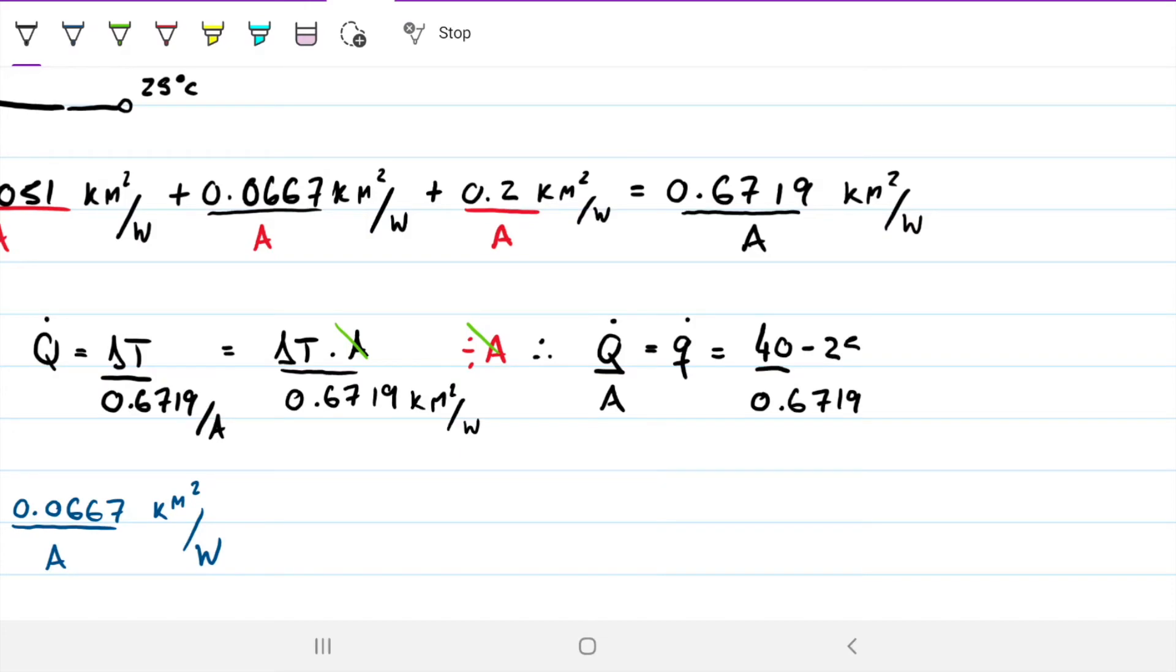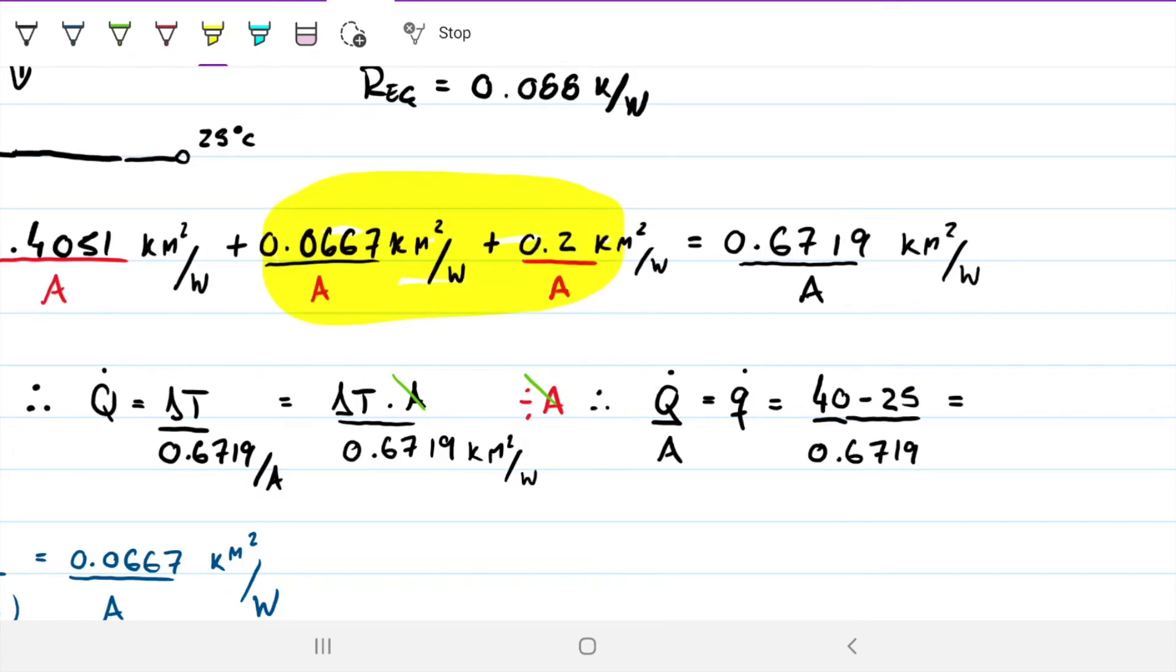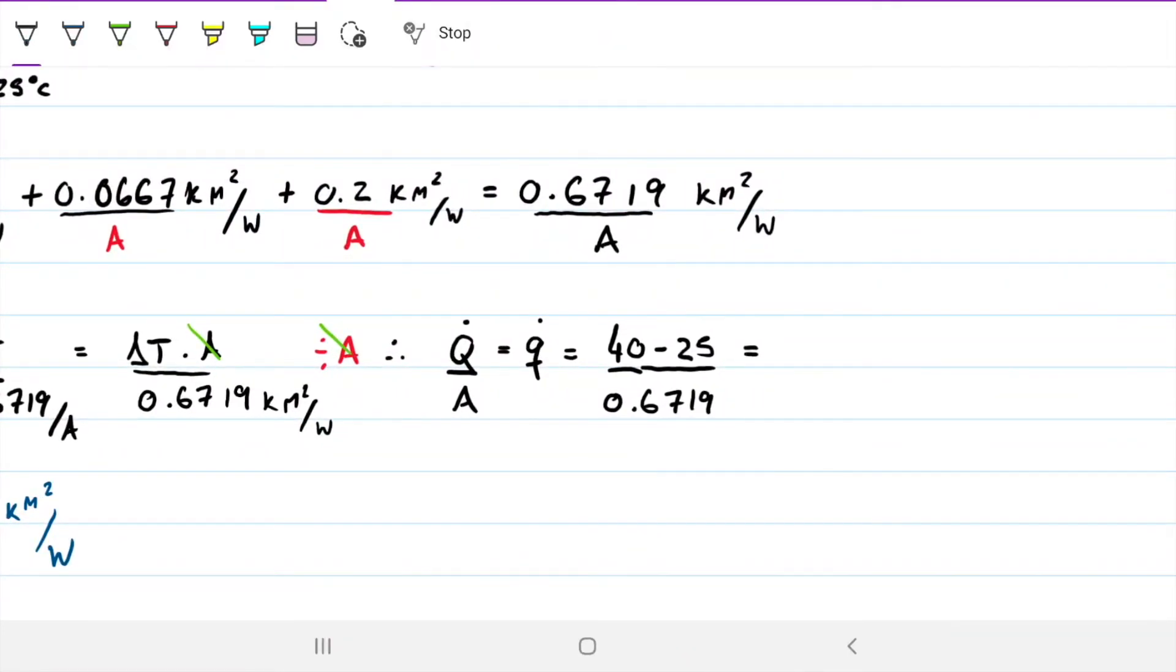On the right hand side dividing area by area means this is just delta T by 0.6719. Our delta T didn't change, it's still 40 minus 25. As a reminder we expect this number to decrease because now we have additional thermal resistances, so there's more things in the way of heat. Therefore we expect the 32-ish that we had before to now decrease, and it does indeed - we get about 22.33 watts per meter squared, which is exactly the unit for heat flux.